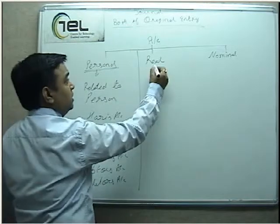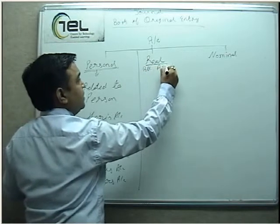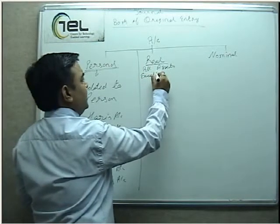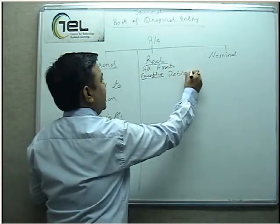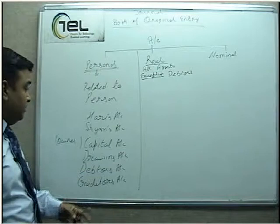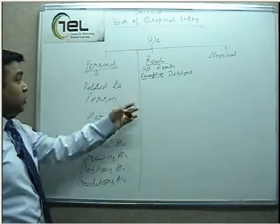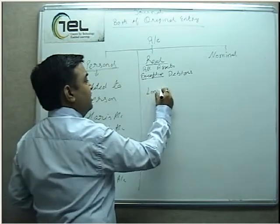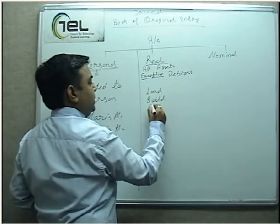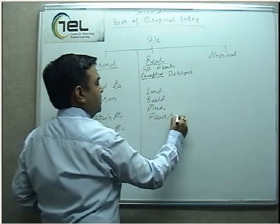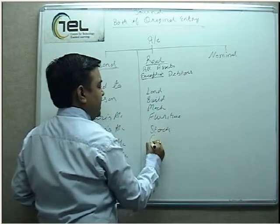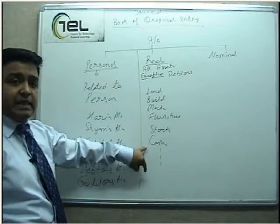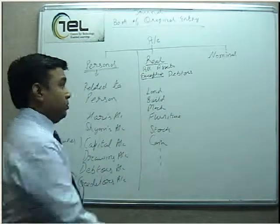Real Account belongs to all the Assets. Almost all Assets are called Real with certain exceptions — for example, Debtors are our Assets but they are not regarded as a Real Account because Debtors are already included in Personal Account, and no two Accounts can be overlapping. If an Account becomes a Personal Account, it can never be a Real Account. All other Assets like Land, Building, Machinery, Furniture, Stock, and Cash are part of Real Account. Fixed Assets as well as Current Assets like Stock and Cash are all Real Accounts — there is no distinction.